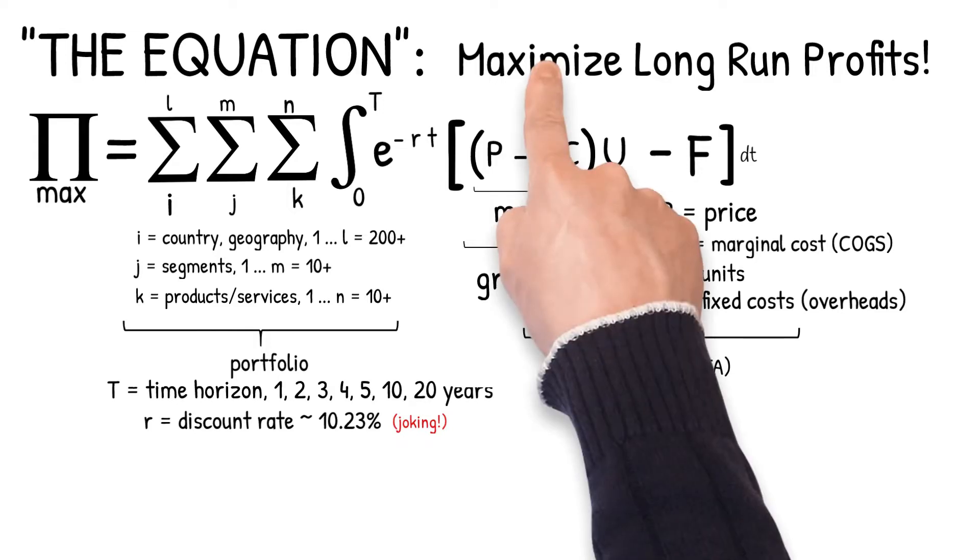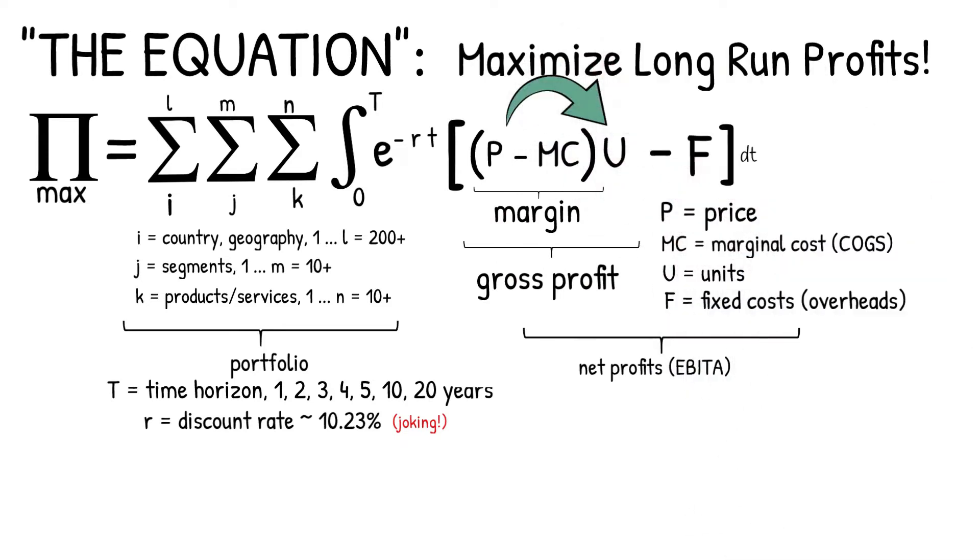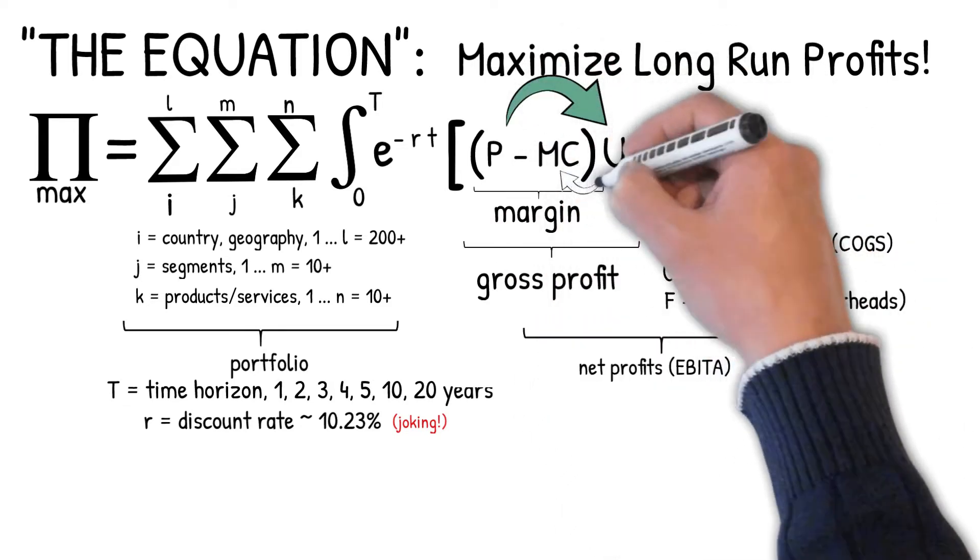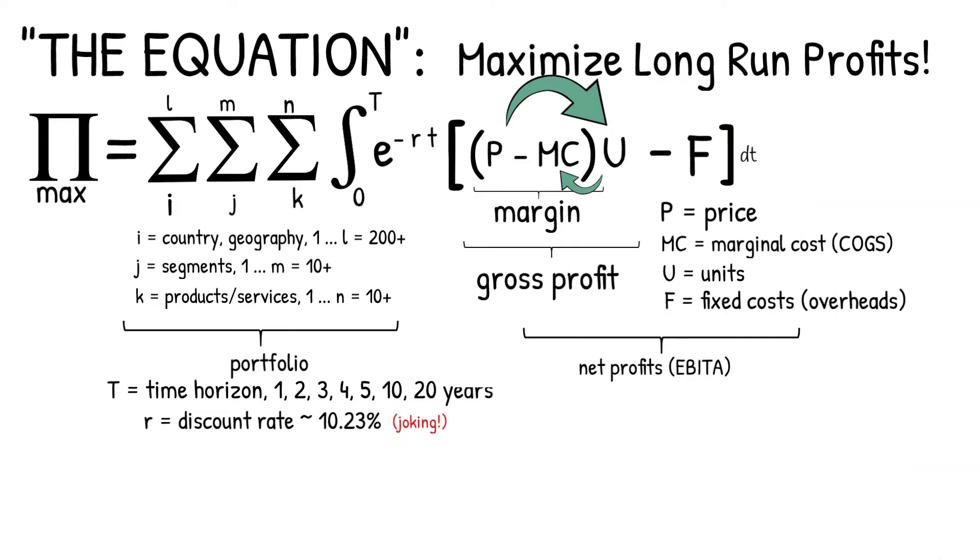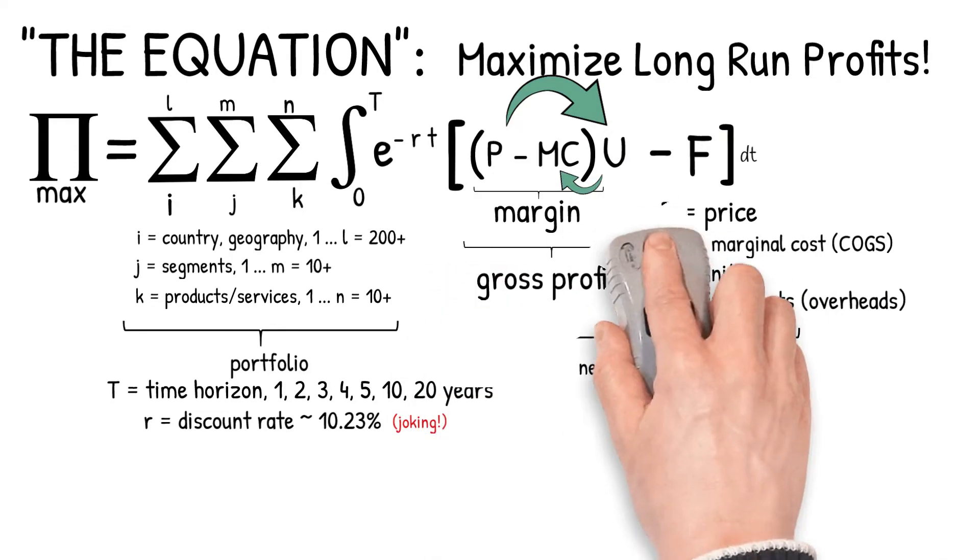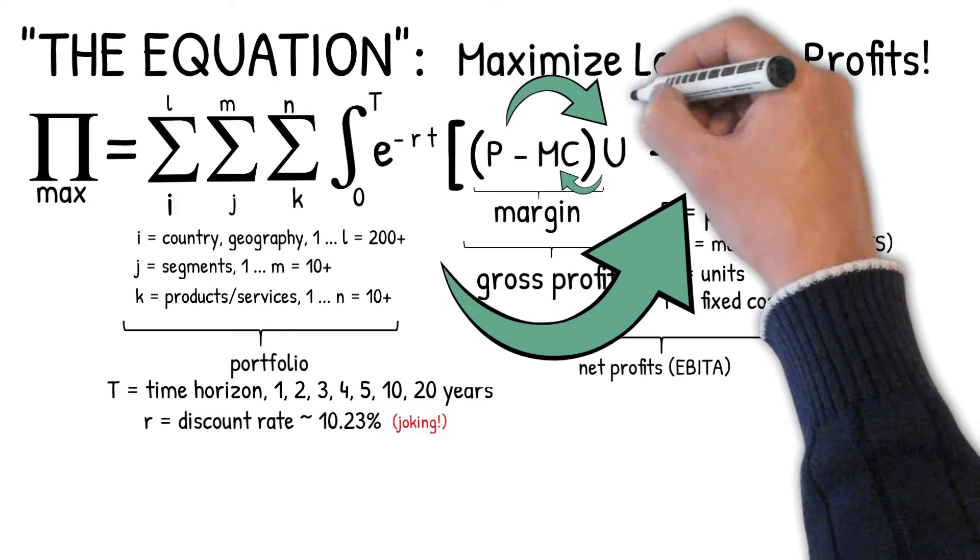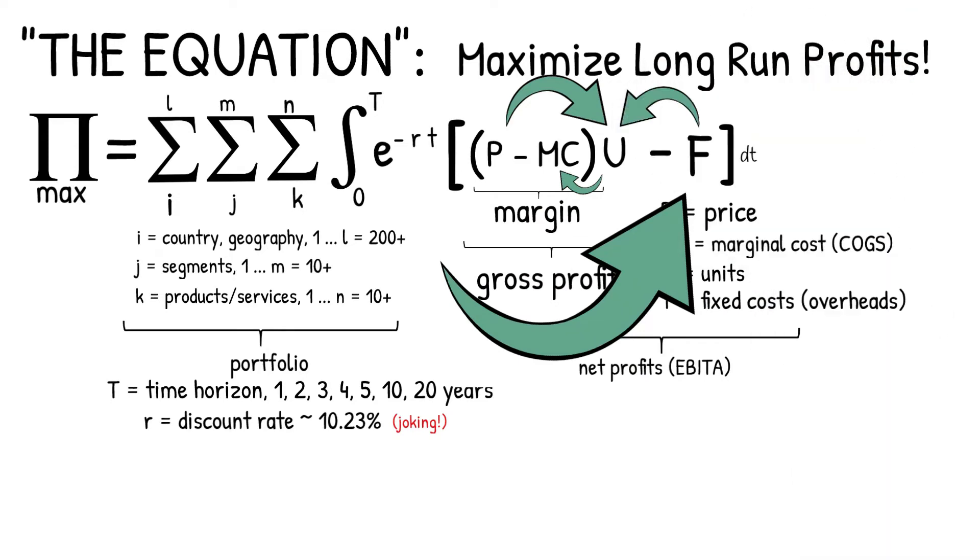The only problem is that price actually affects the units you sell. If you charge too high, no one's going to buy your product. As you sell more products, your marginal costs might go down. As you expand internationally, your fixed costs go up. That also will have an effect on the units you sell.